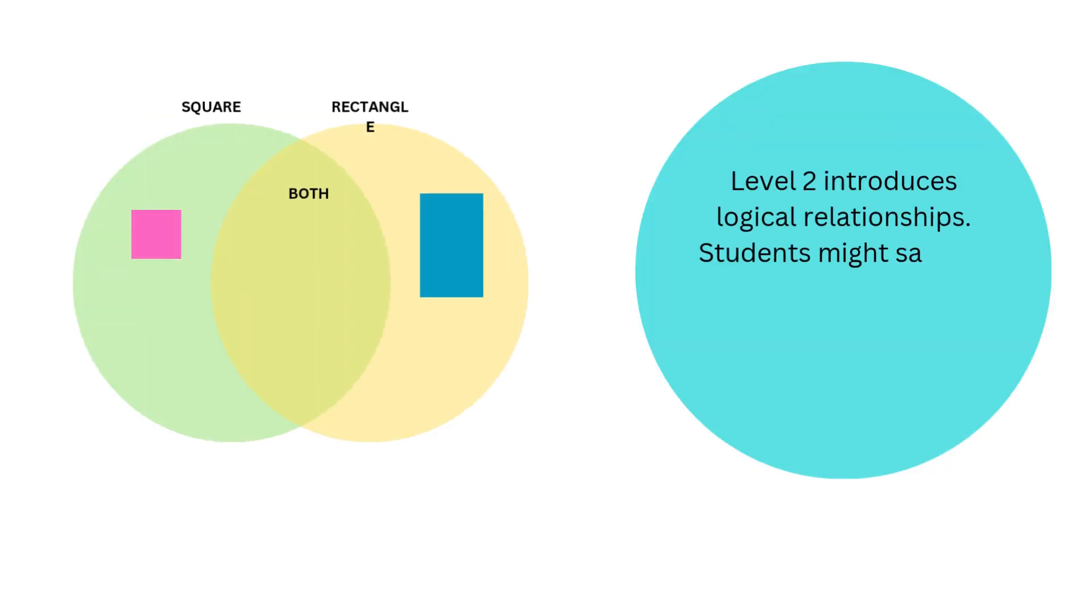Level 2 introduces logical relationships. Students might say, all squares are rectangles, but not all rectangles are squares.